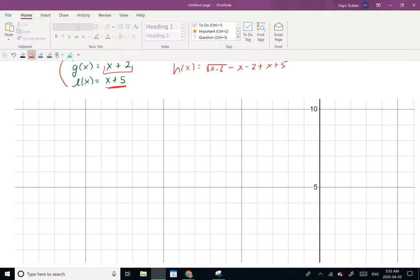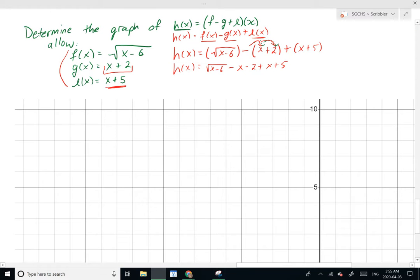And from here, I'm going to simplify by combining like terms. So I'm going to combine these like terms here, and then my constants together. So I will end up getting h(x) equaling the square root of x minus 6, negative x minus x. That actually cancels out. And then negative 2 plus 5, which will give me positive 3.